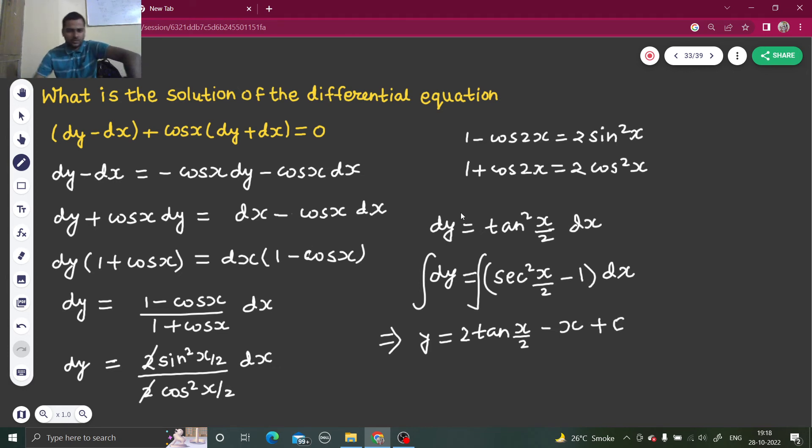Fine, so this is your final answer: y equals 2 tan x by 2 minus x plus c. They haven't given any condition to find the value of the constant, so this will be our final answer.